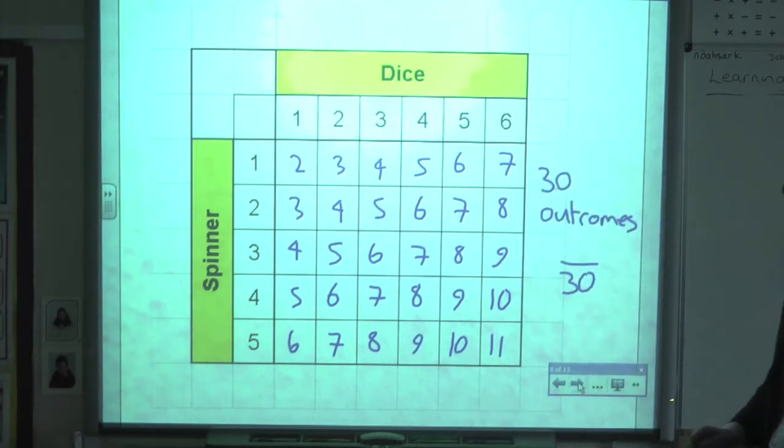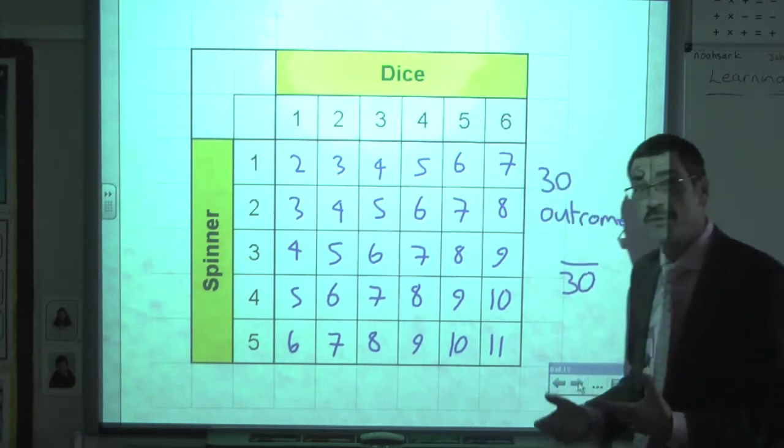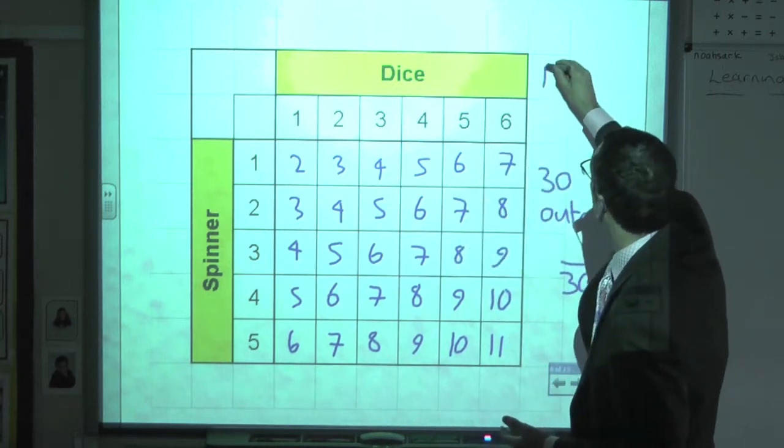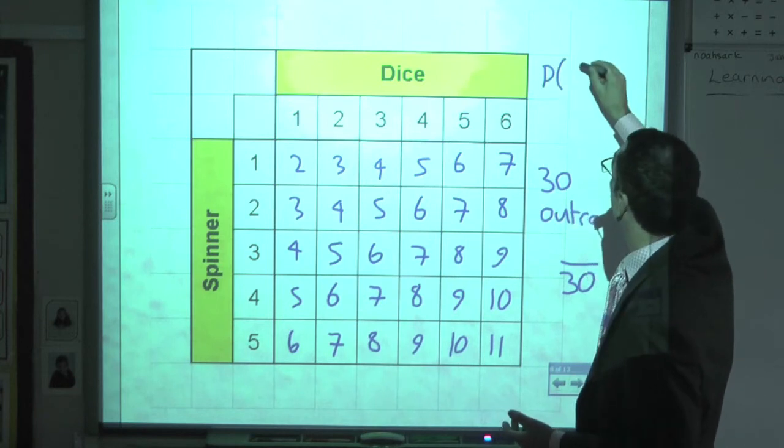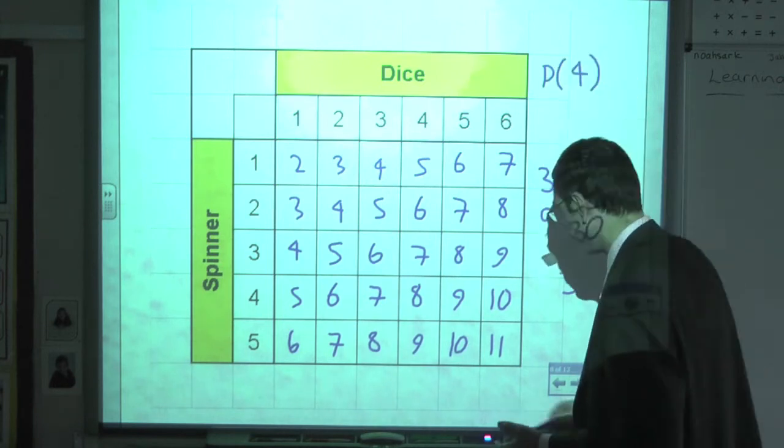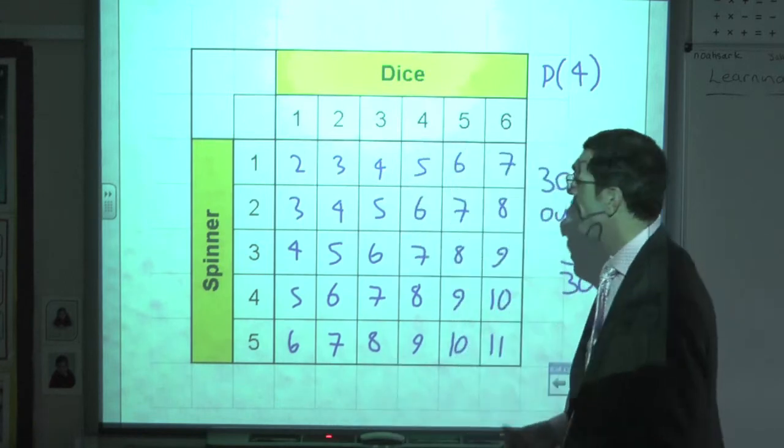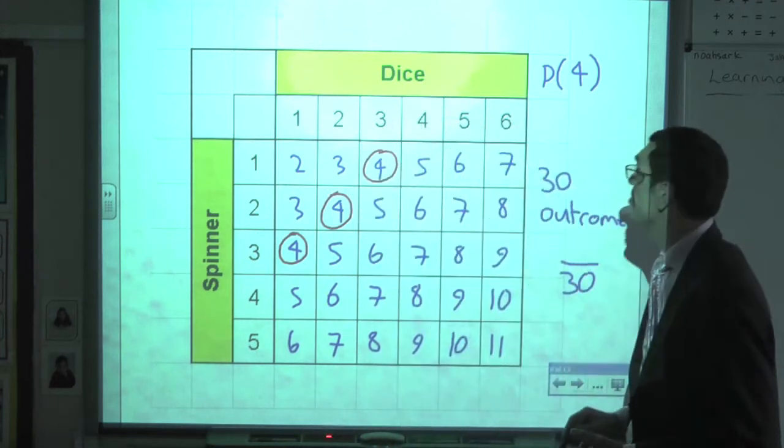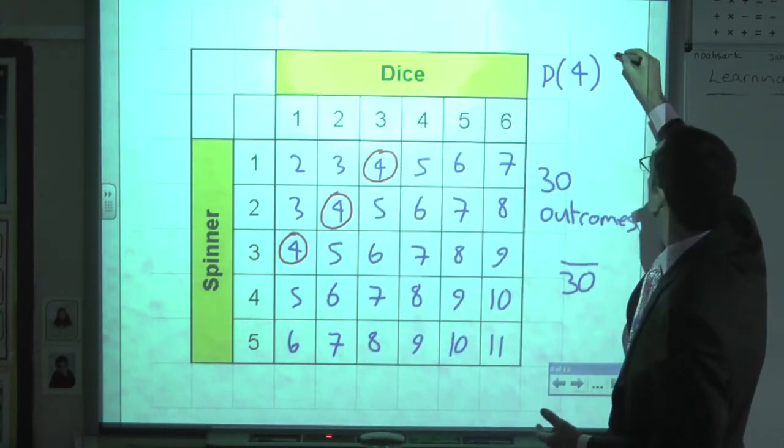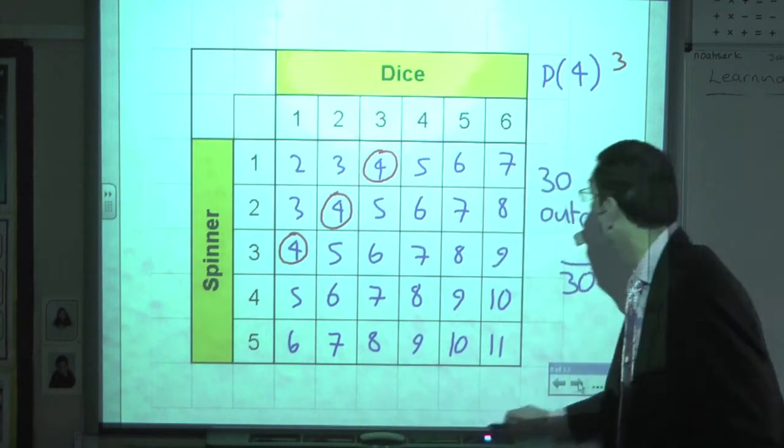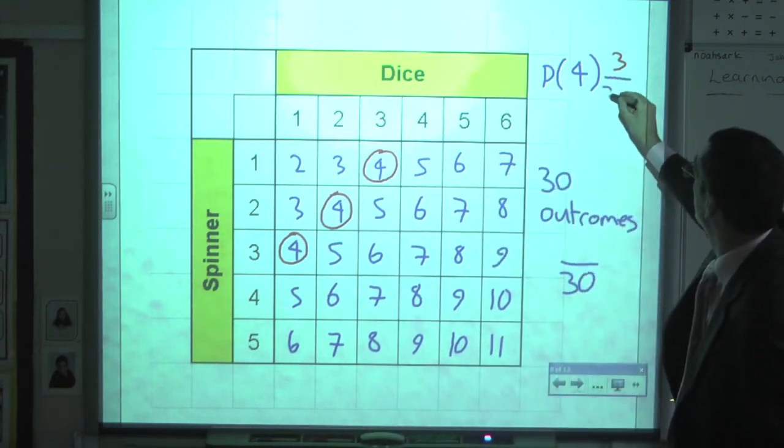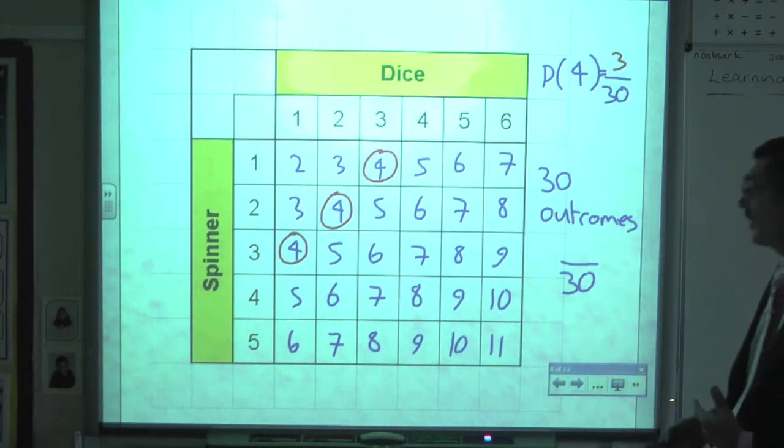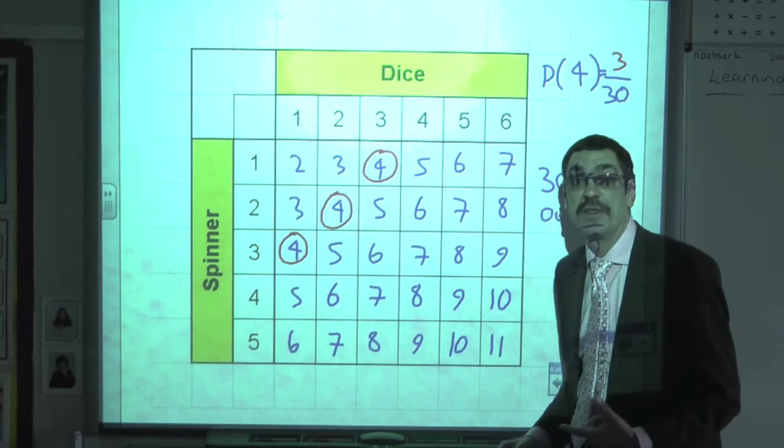So we want to look at here things like the probability of obtaining certain scores or scores that are more than other elements. So if I want to find out what the probability of scoring a 4, go to our table. Where are all the scores of 4? I've got 1 there, 1 there, and 1 there. So that was 3 fours. And we already said it was out of 30. So the probability of getting a 4 on this spinner and dice is 3 out of 30.